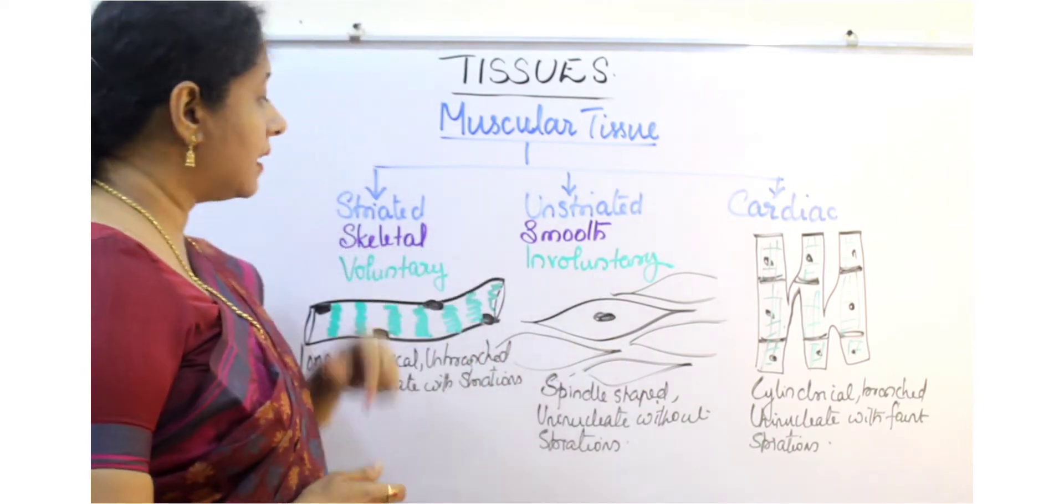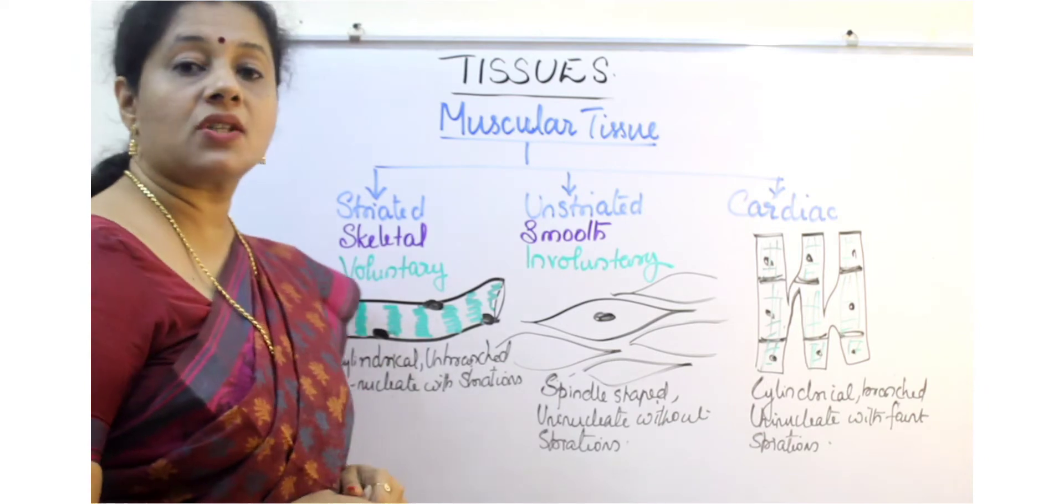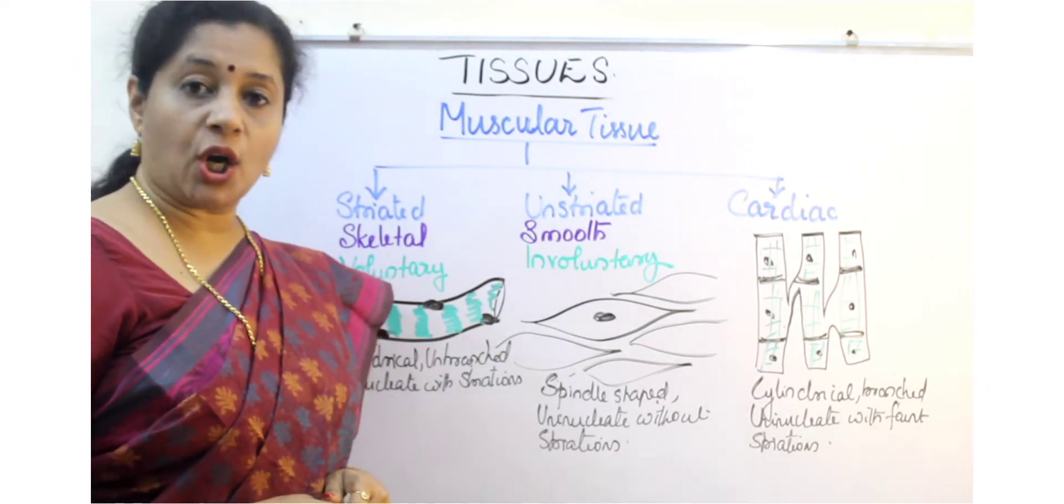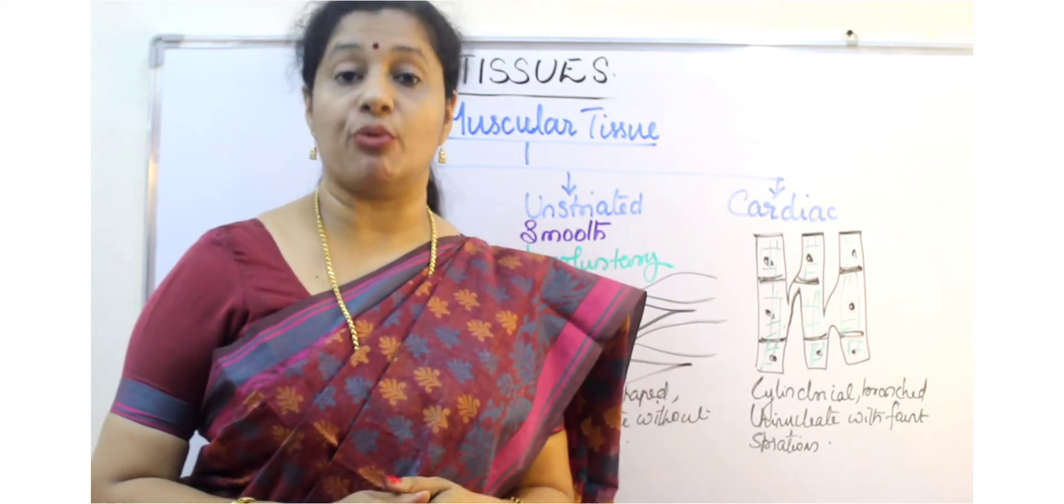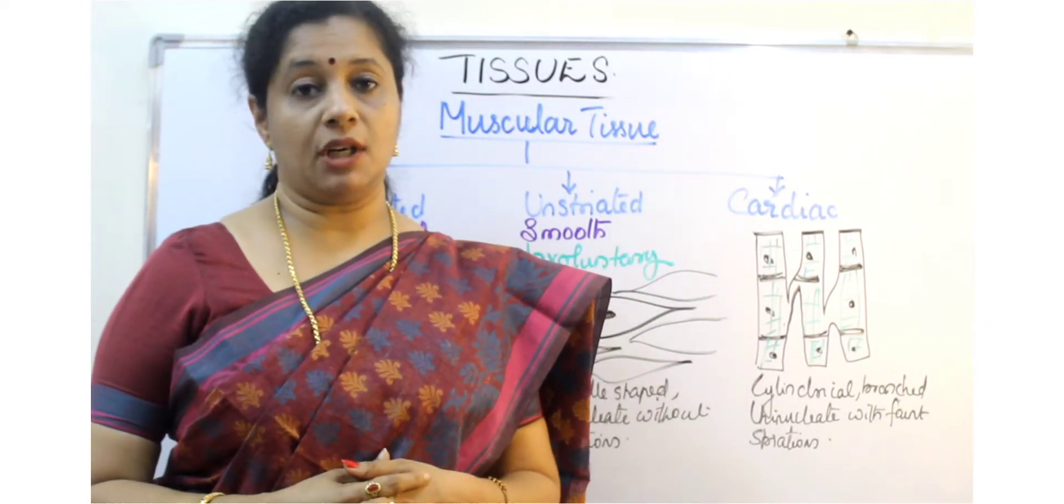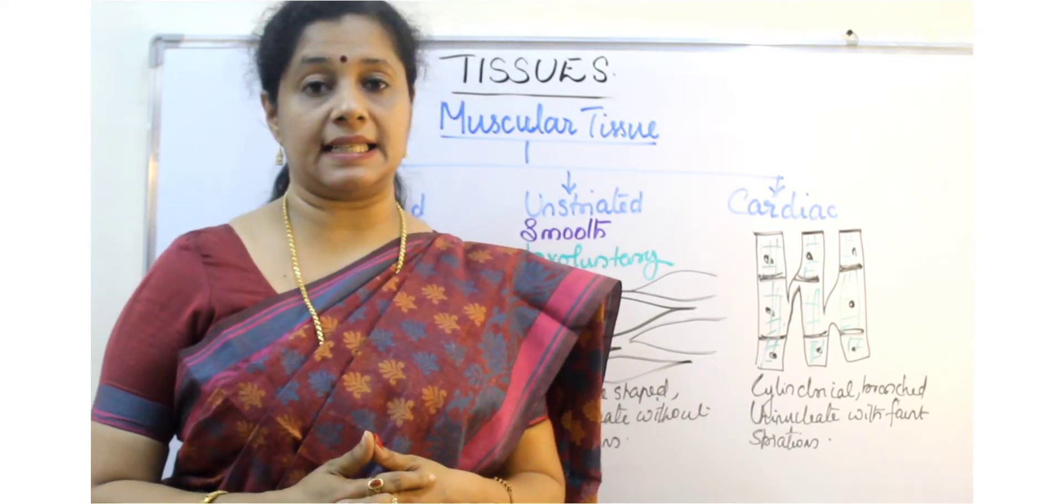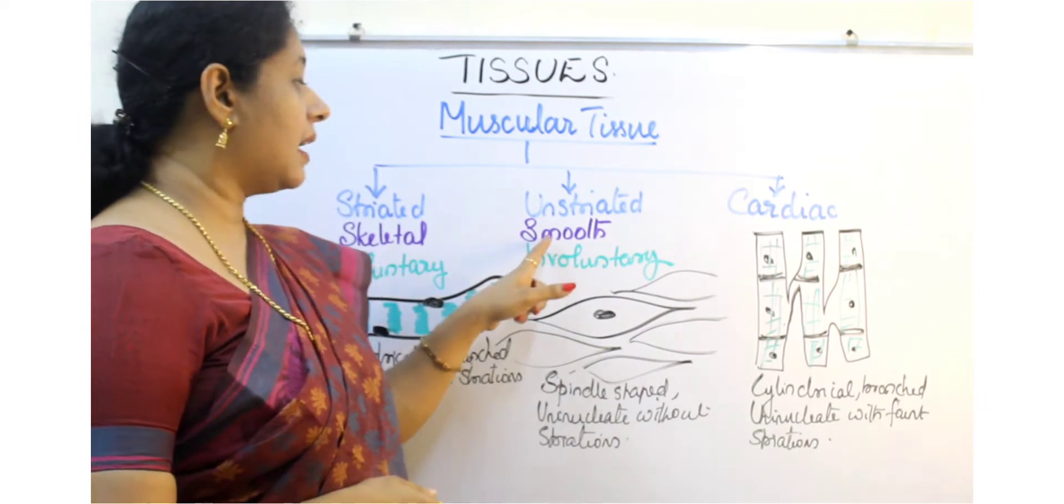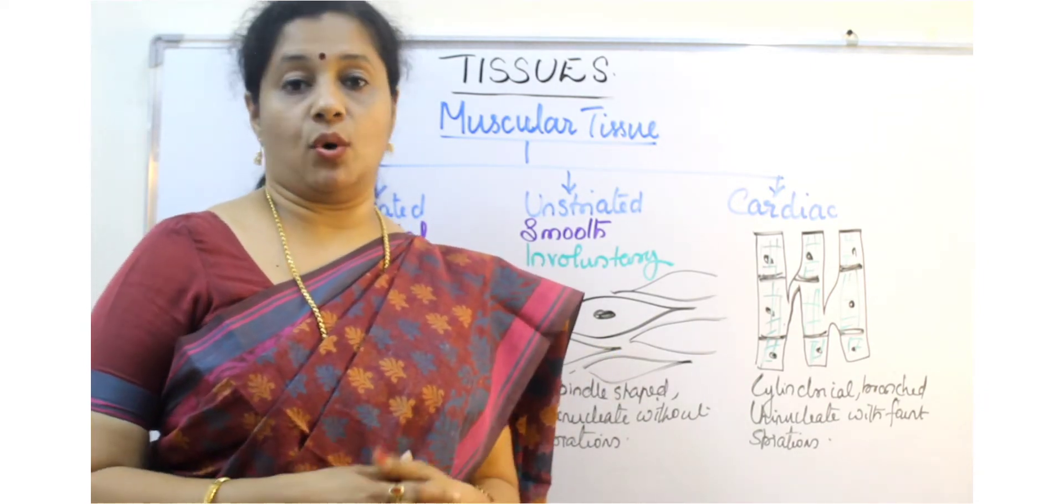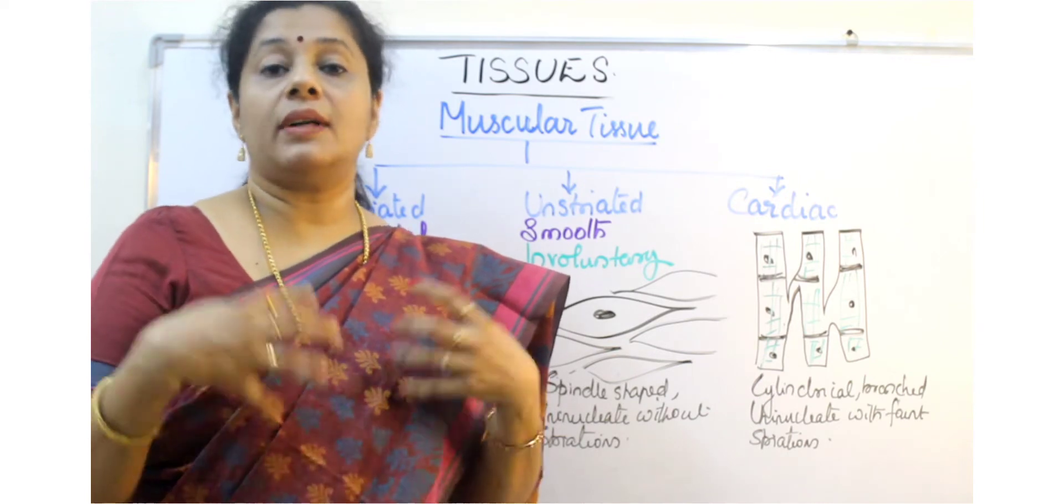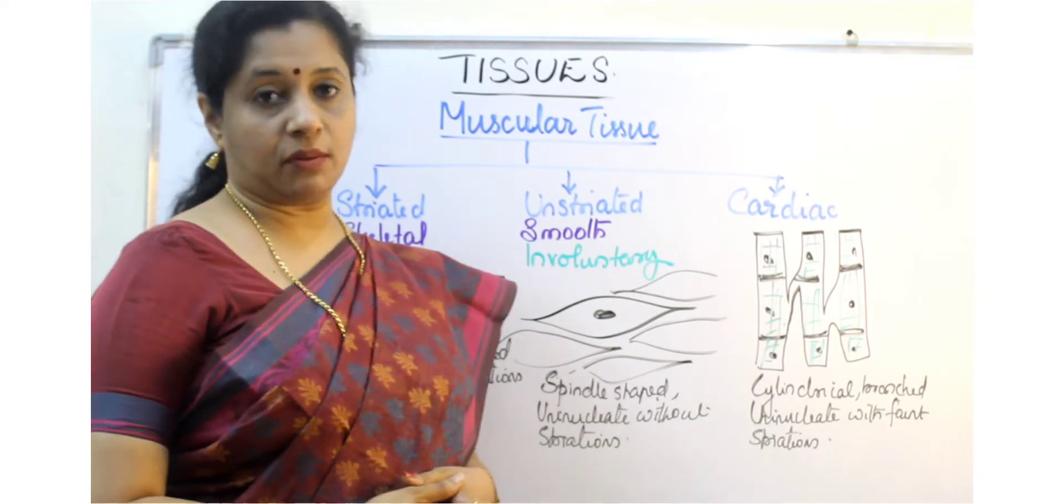They are otherwise called skeletal muscles or smooth muscles. Striated muscles are called skeletal muscles because these muscles are attached to our bones and enable us to move. Movement is possible due to the skeletal muscles. These are called smooth muscles because they are not attached to any bones. They are found in the internal organs without skeletal support.